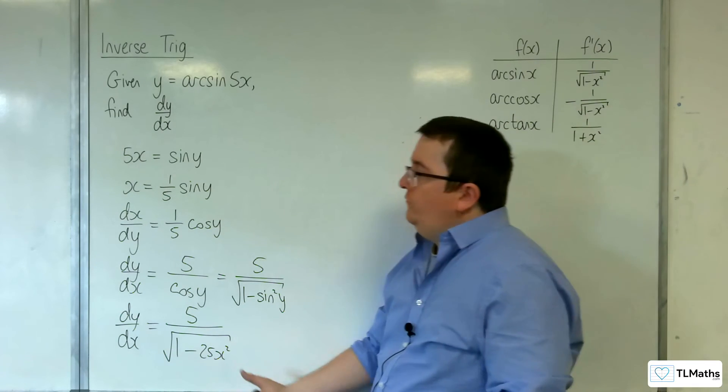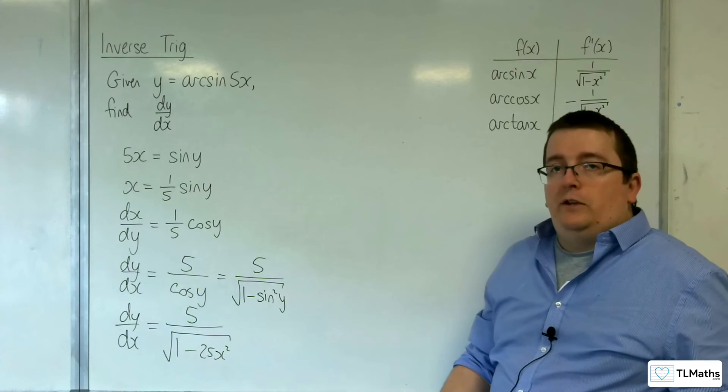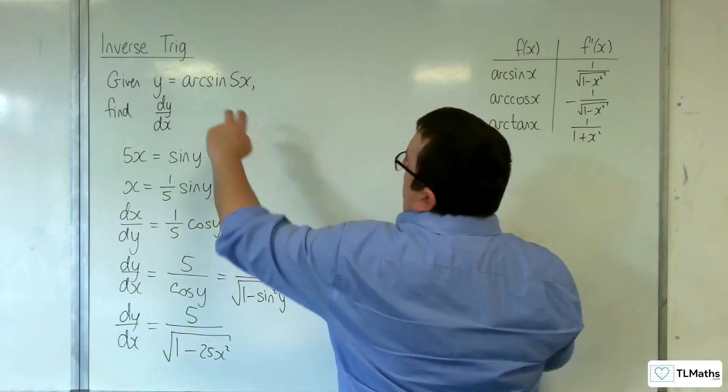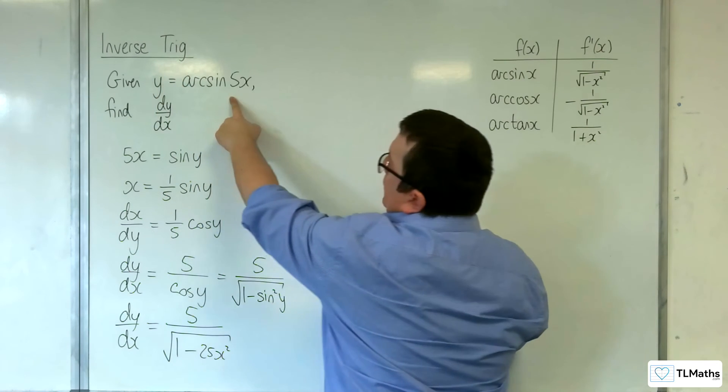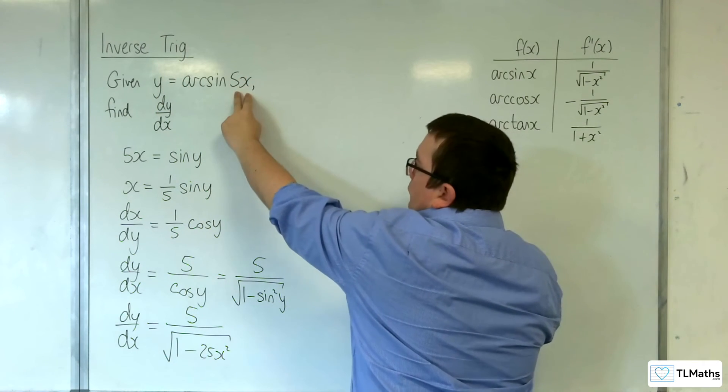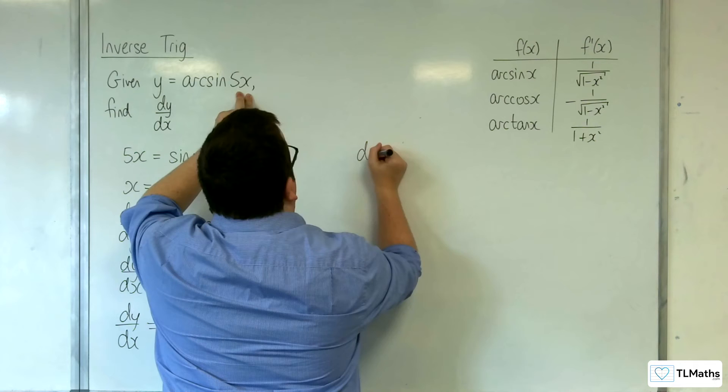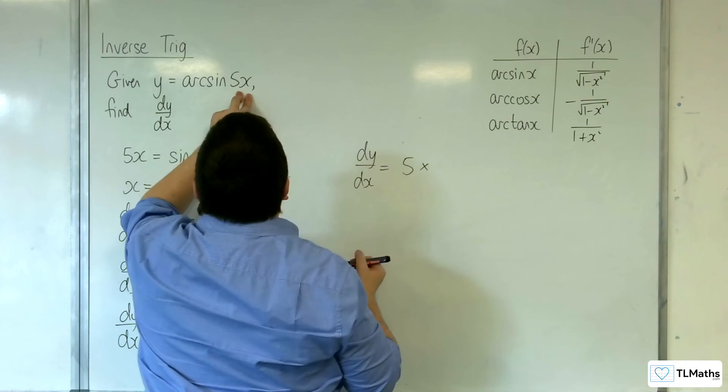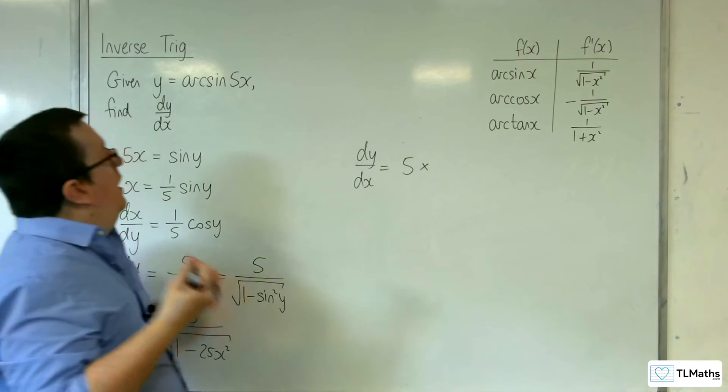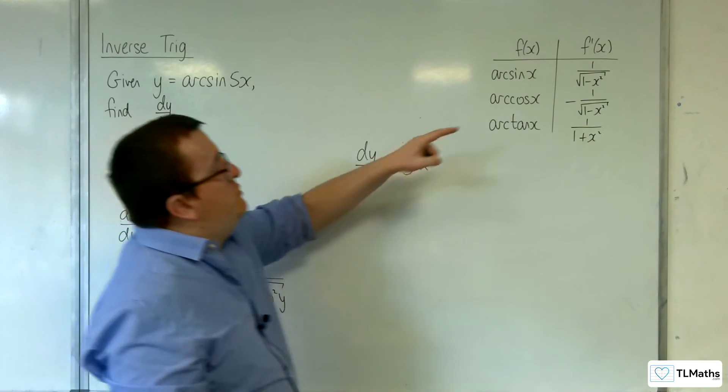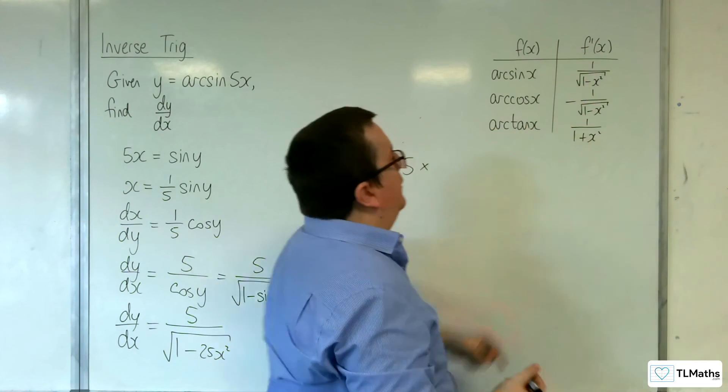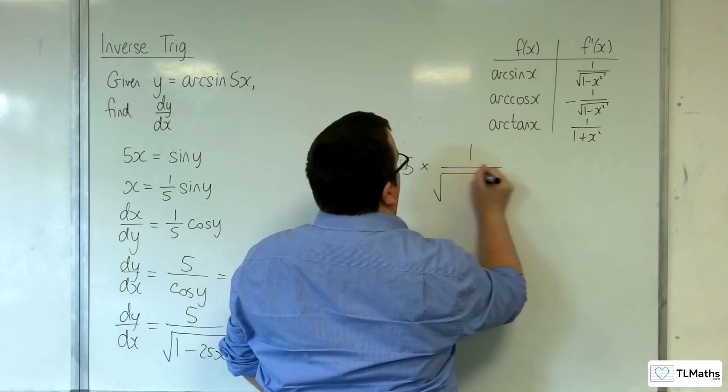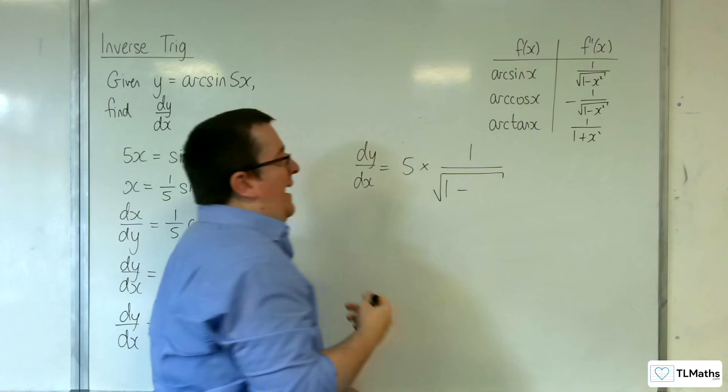Okay, the alternative would be to use the chain rule. So the chain rule would say that y equals arc sine of 5x. The derivative of the inside comes outside. So we know that for dy by dx, the 5 is going to come out the front. Arc sine differentiates to 1 over the square root of 1 minus x squared. So 1 over the square root of 1 take away x squared.